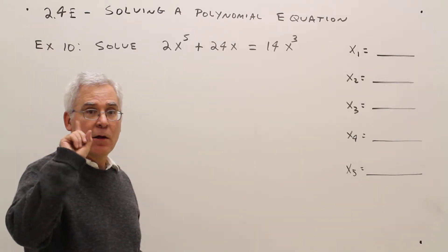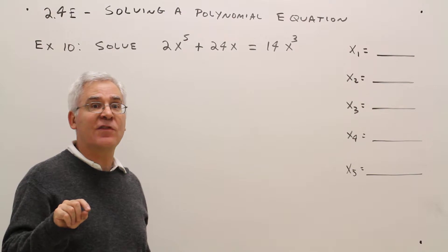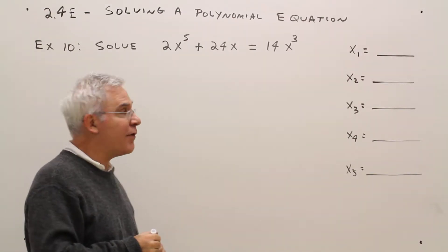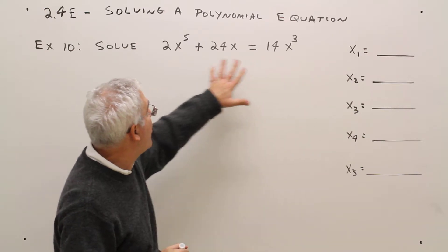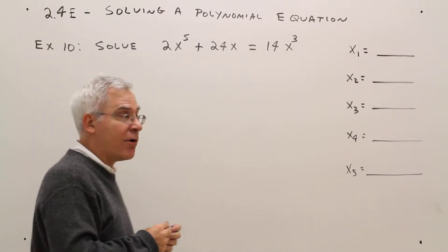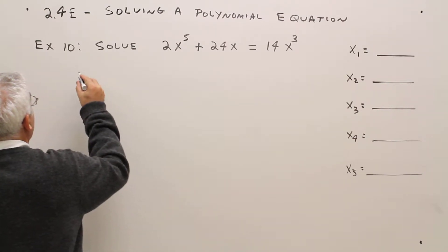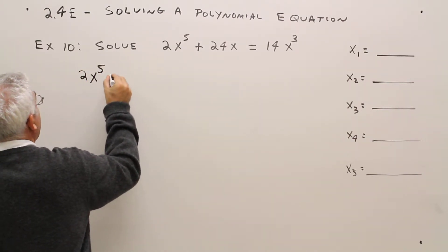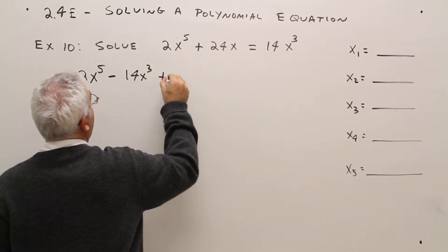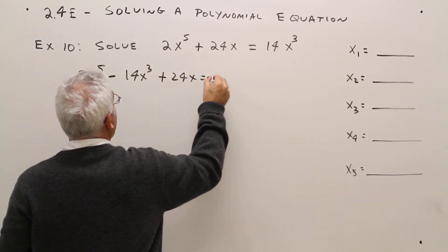Alright, step one. Always, always, always go into standard form. So a zero on one side, everybody else on the other side. So I'll bring this 14x cubed over here and put it in descending order. Highest degree term going down. So I will obtain 2x to the fifth minus 14x cubed plus 24x equals zero.